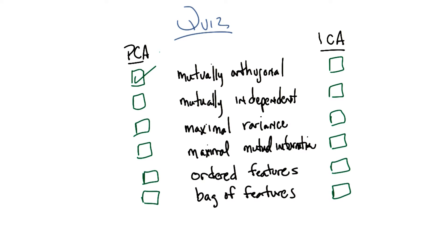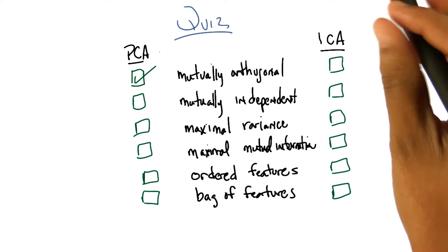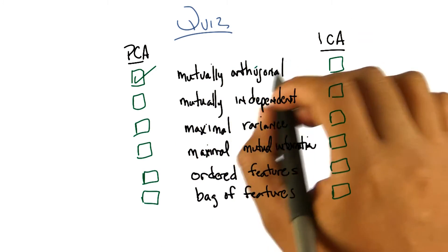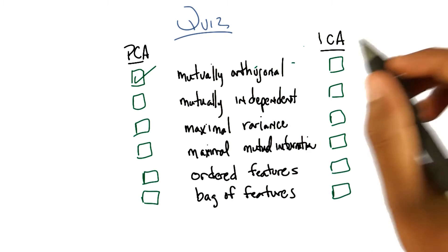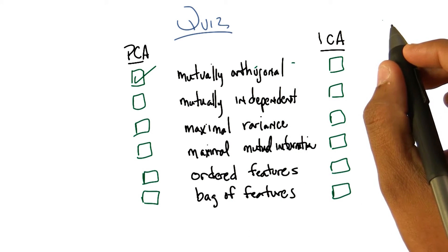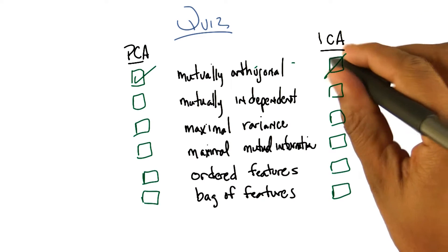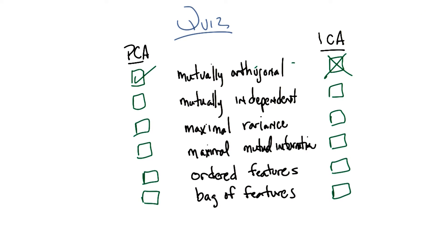That's right. And in fact, ICA, by finding independent projections, are almost all but guaranteed to find ones that are not mutually orthogonal. It doesn't care at all. So in fact, this is what makes PCA a global algorithm, since it has this global constraint of mutual orthogonality, where ICA really there's nothing in its definition that cares about that. So this should be unchecked.